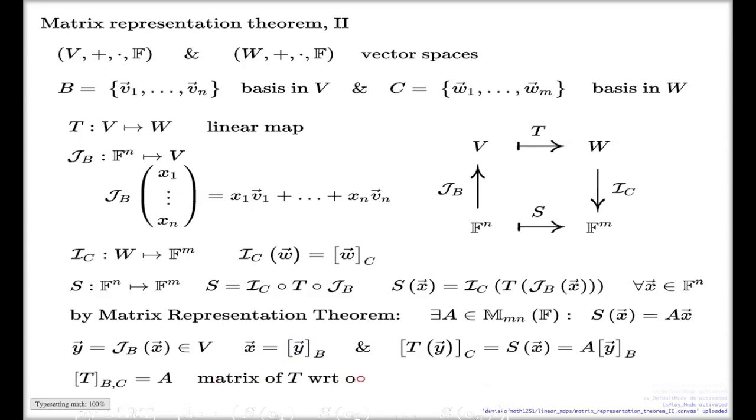That's the one which we're going to call matrix of T with respect to basis B in the domain and basis C in the codomain. Here's a symbol for such a matrix. That's the name for such a matrix. If you don't have any questions I want to take the second part of the theorem.